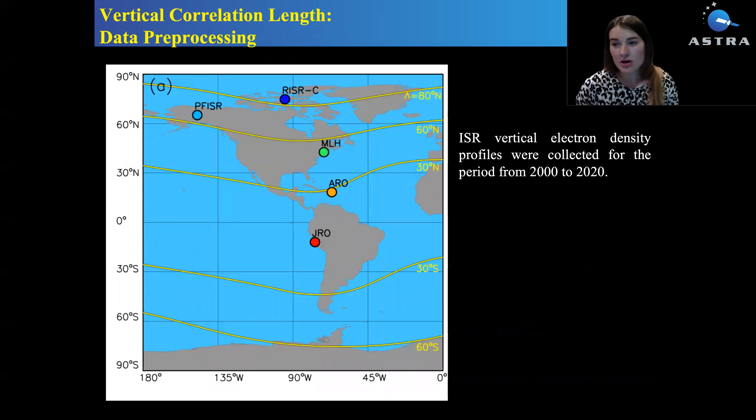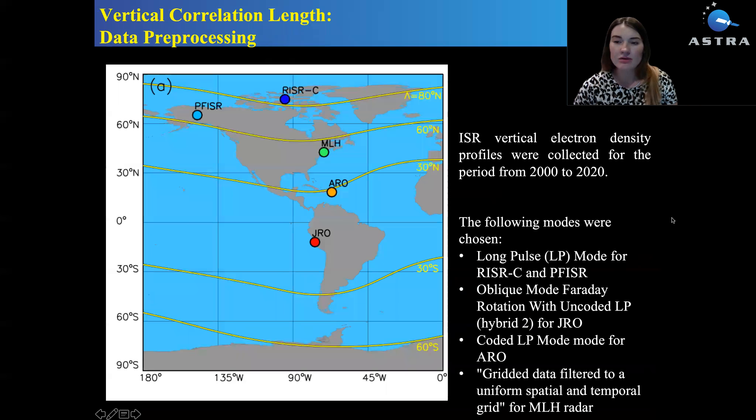For the data, in order to find the model errors, we used incoherent scatter radar data from five sites: from Resolute Bay incoherent scatter radar Canada, Poker Flat, Millstone Hill, Arecibo and Jicamarca. We looked at data from 2000 to 2020 and we were interested only in electron density in the vertical profile, vertical direction.